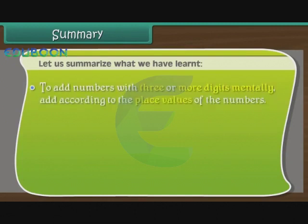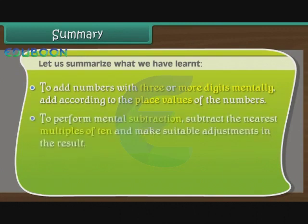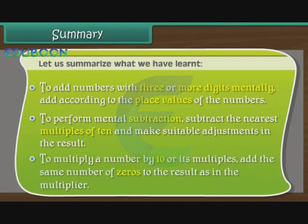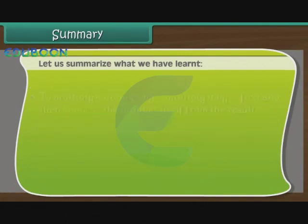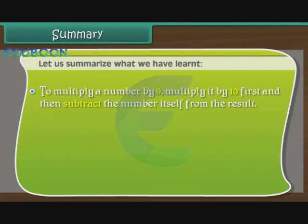To add numbers with 3 or more digits mentally, add according to the place values of the numbers. To perform mental subtraction, subtract the nearest multiples of 10 and make suitable adjustments in the result. To multiply a number by 10 or its multiples, add the same number of 0s to the result as in the multiplier. To multiply a number by 9, multiply it by 10 first and then subtract the number itself from the result.